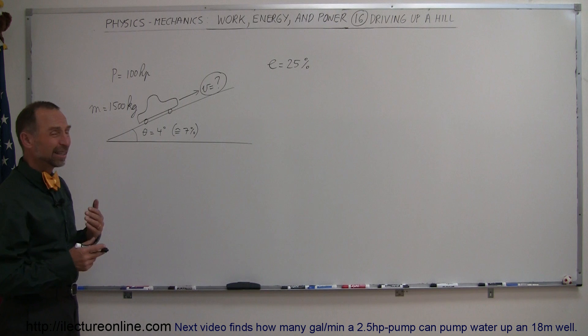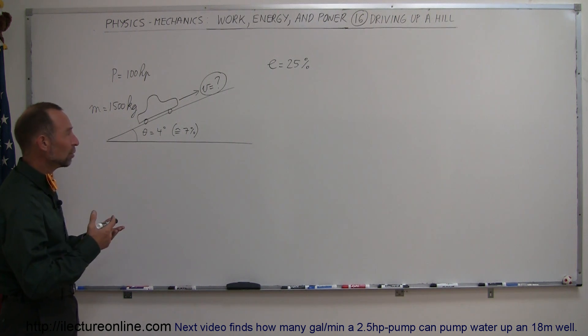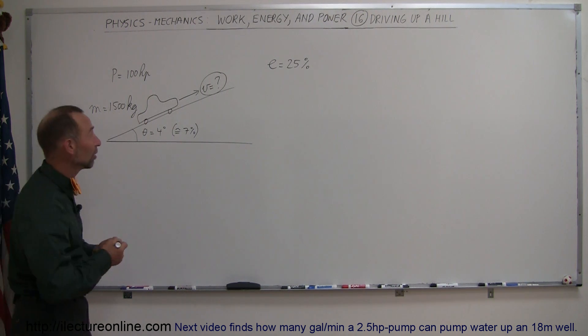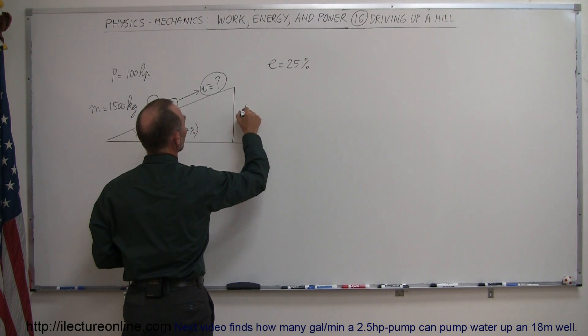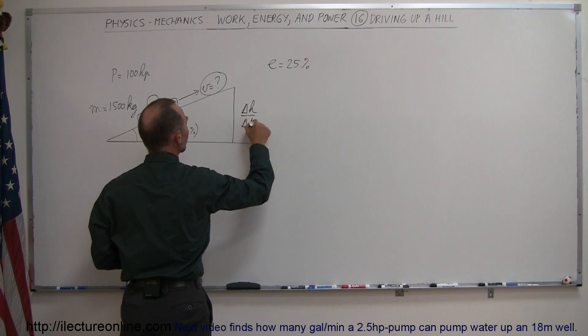So again, we can think of power as being the increase in energy, which in this case would be increase in potential energy, or at least a rate at which we can increase potential energy, so we're going to have to know what the delta H delta T is equal to.